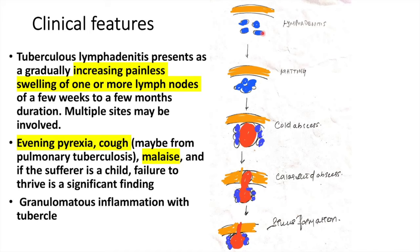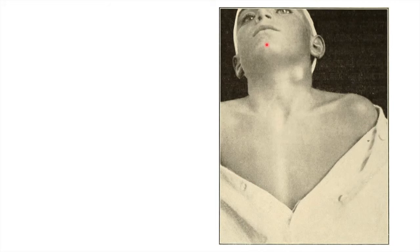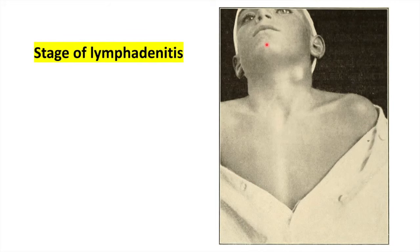Now coming to the most important part of tuberculosis lymphadenitis — the stages. First we have lymphadenopathy, followed by matting, formation of a cold abscess, which progresses to a collar stud abscess, and finally results in sinus formation. Let's look at all of these stages one by one.